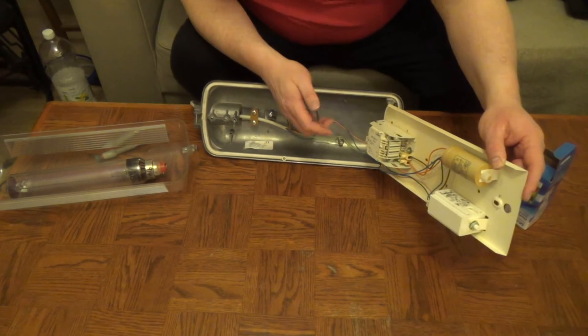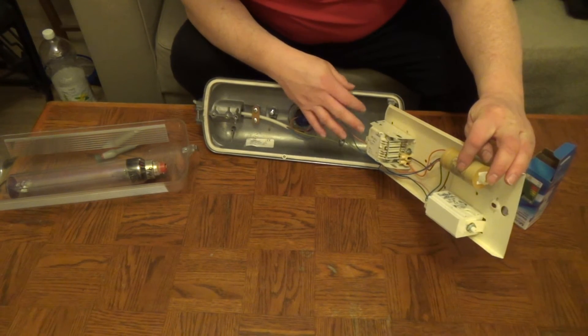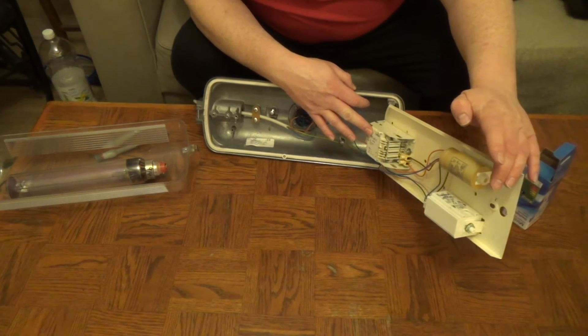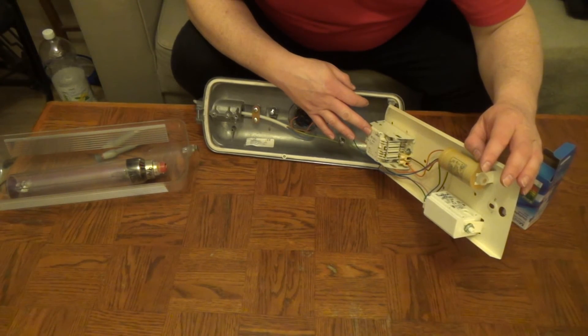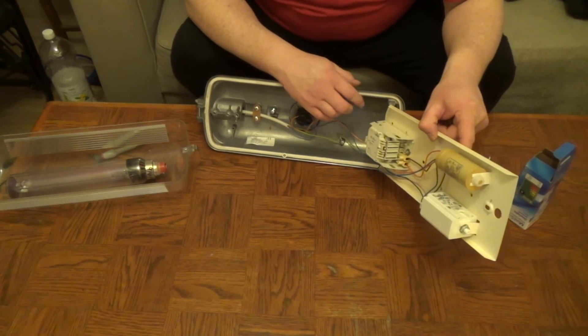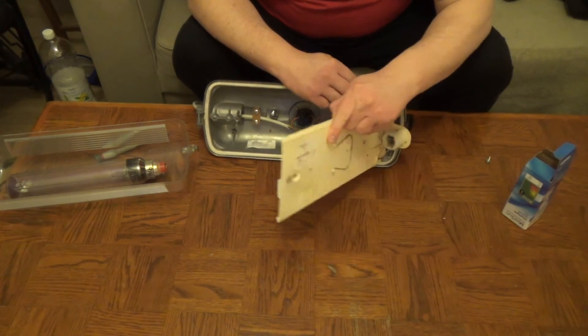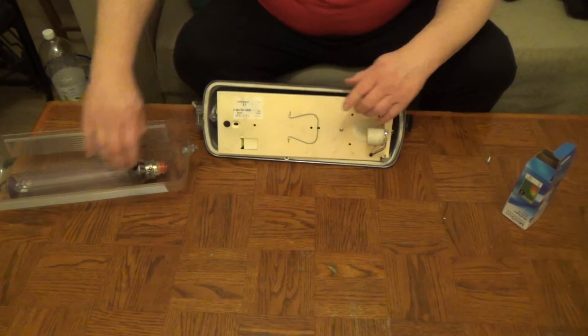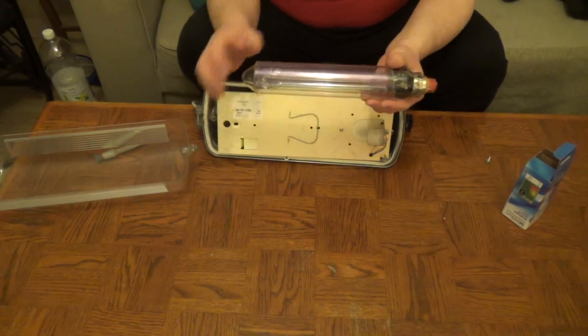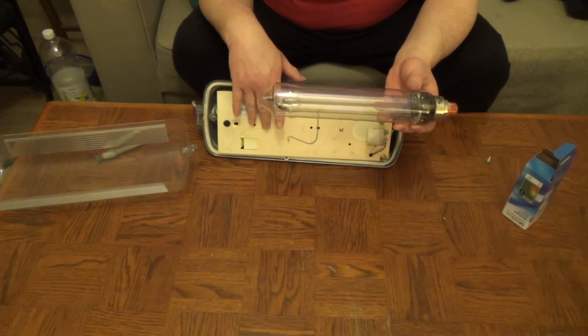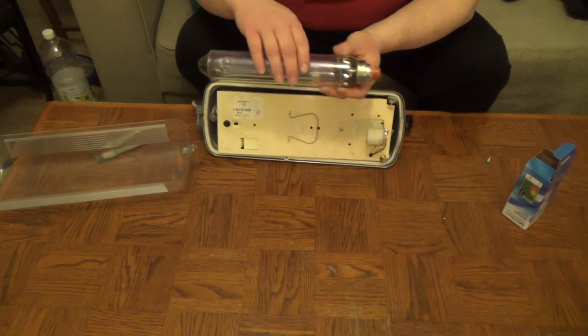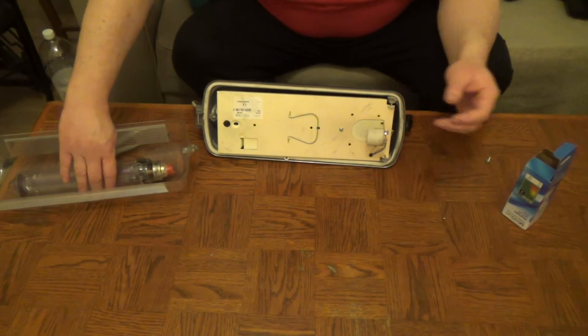I don't know which one's which. I think this is the igniter and the ballast. But anyway that's why you won't be able to just buy one of those bulbs and plug it straight into your household socket. That's why you've got to have one of these things to run it. Okay, I think I'll screw this back down again.